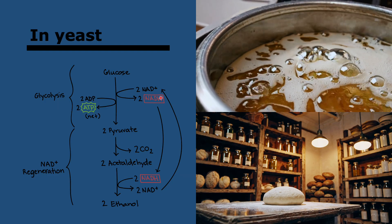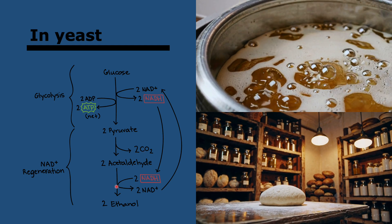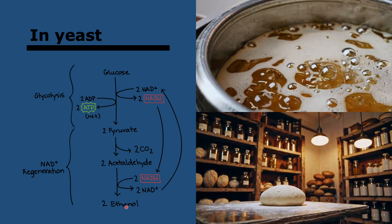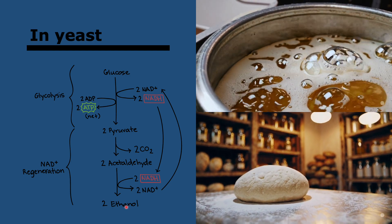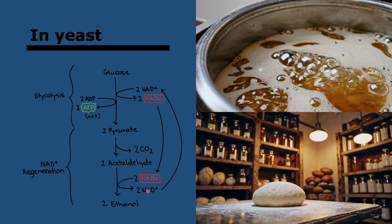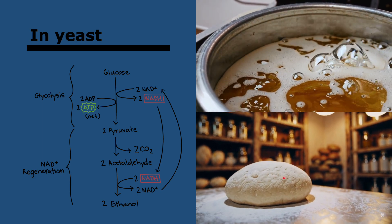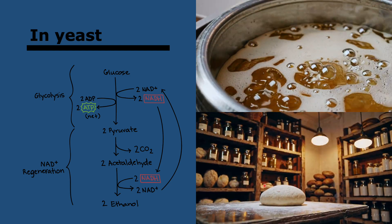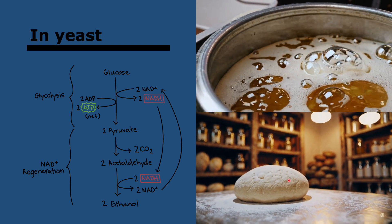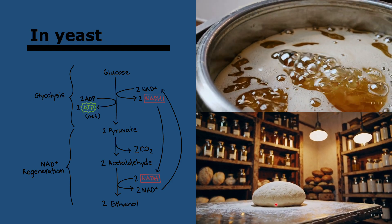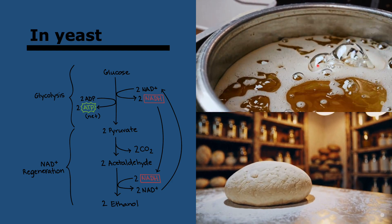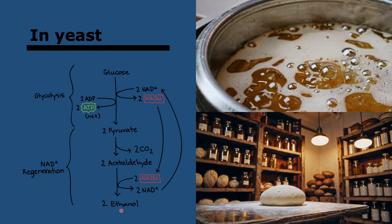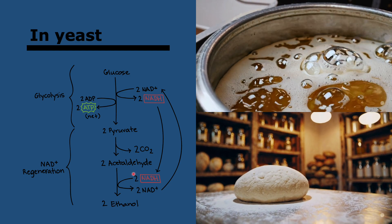Anaerobic respiration is a little different in yeast. The goal is similarly to regenerate NAD+, but instead of lactate, yeast produce ethanol and CO2. This is called ethanol or alcoholic fermentation, and it's used in baking and brewing. In baking, the CO2 produced creates bubbles of air, causing the dough to rise. In brewing, ethanol converts things like grape juice or barley into alcohol. Ethanol is alcohol, which explains why yeast is used in these industries.